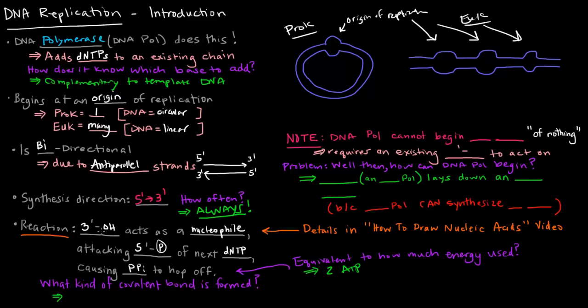So when this nucleophilic attack occurs and the pyrophosphate leaves, there's a covalent bond that is formed. That covalent bond is called a phosphodiester bond.